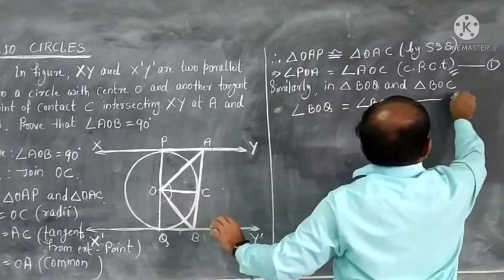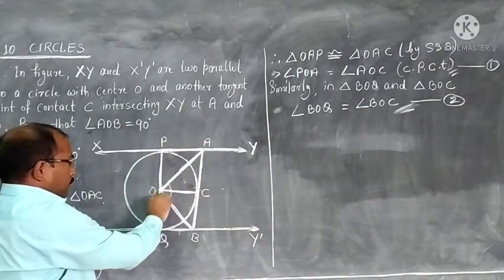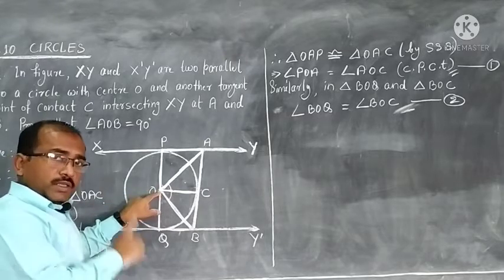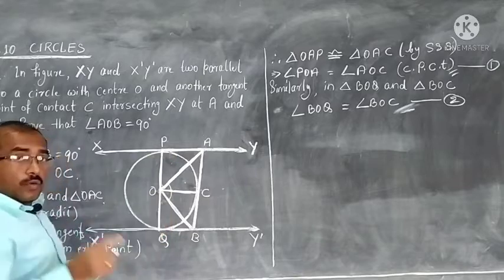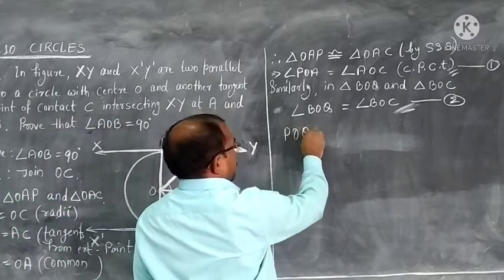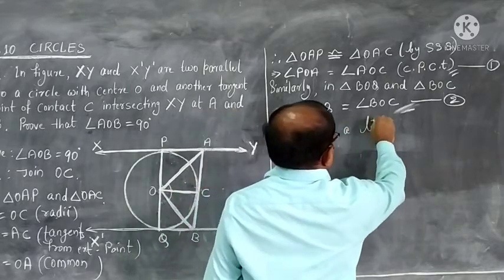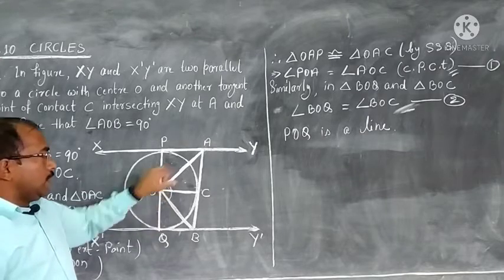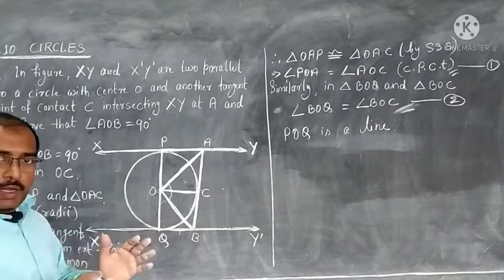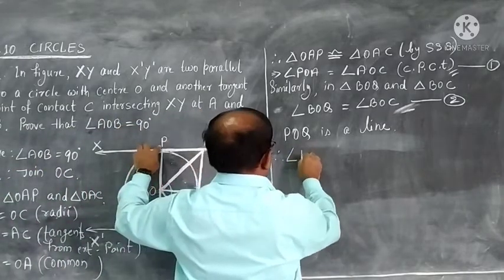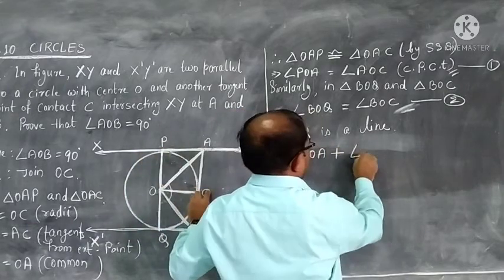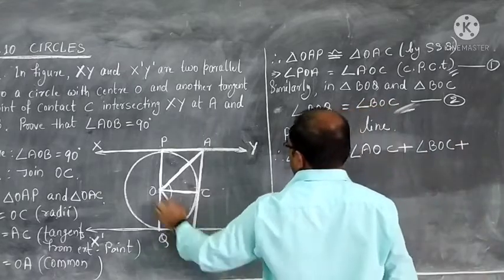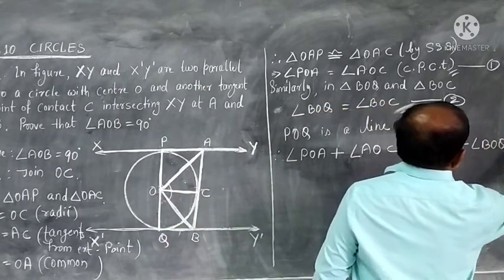After that, we note that POQ passes through the center, so PQ is a diameter — a straight line. A straight line makes 180 degrees. So POQ is a straight line, and the straight angle is formed in four parts: angle POA, angle AOC, angle BOC, and angle BOQ. Adding all four angles gives 180 degrees.